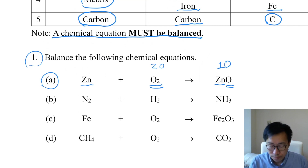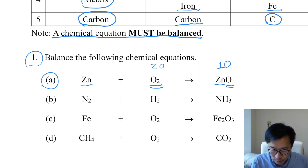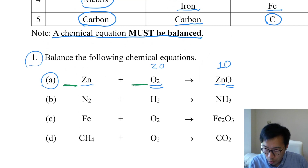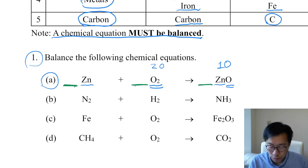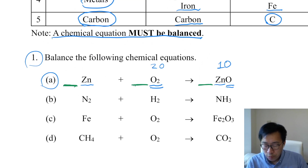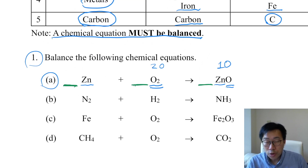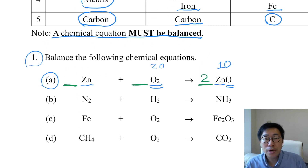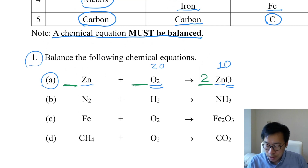So you have to add some numbers. Every time when you add numbers, you can only add them before each reactant or product — on the green lines. So, as there are two O atoms on the left and one on the right, you multiply the whole formula SnO by 2, and write the 2 here as step 1 of balancing.